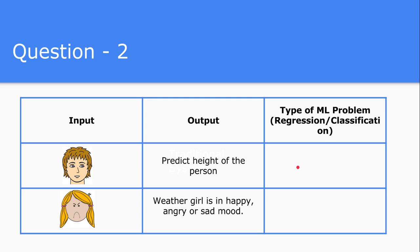It all depends on how you define the machine learning problem — whether regression or classification. The same problem one person may look at as a classification problem and another as a regression problem. In our case, since we consider height as a continuous value, it becomes regression. But if you make it discrete — say 200 or 500 different categories — it would be a classification problem. For our case, let's consider height as a continuous value, so it is a regression problem.